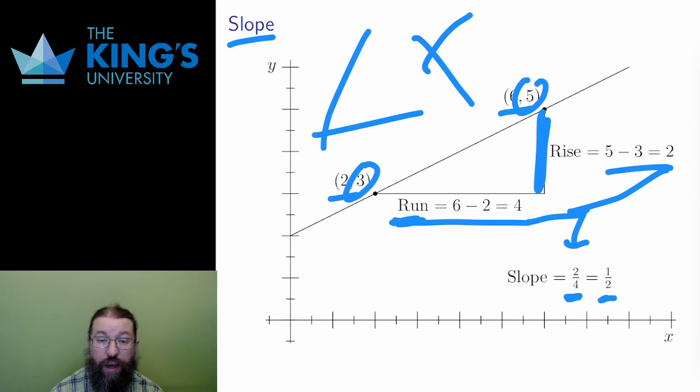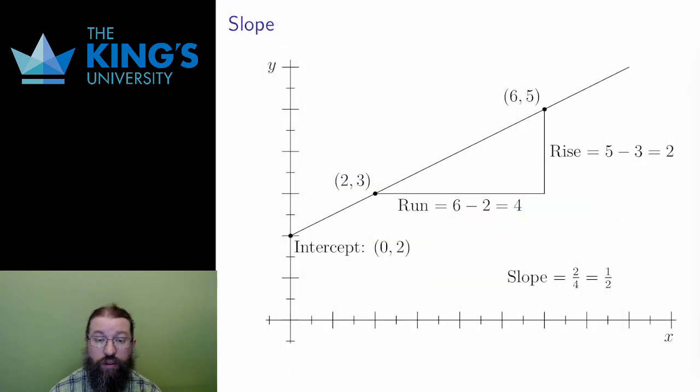Using slope, I can define the slope-intercept way of writing the equation of a line. This is the most standard presentation and the easiest to interpret geometrically. However, I need one more piece of information. In addition to the slope, I need the place where the line crosses the y-axis. This is called the y-intercept.